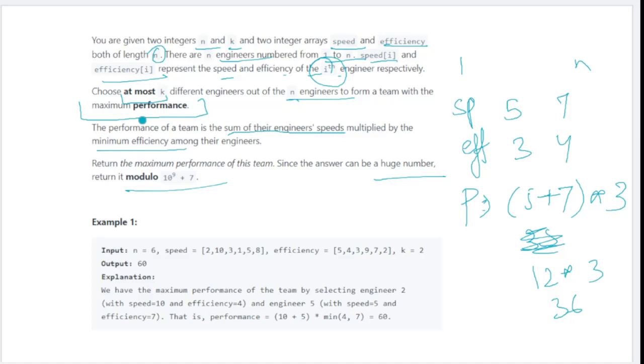The example is: n is 6, you have speed and efficiency, and k should be 2. Let's write it here. n=6, speed is 2, 10, 3, 1, 5, 8.